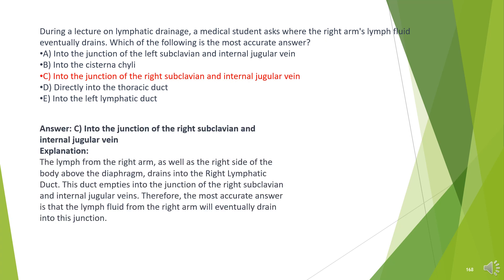The answer is C. Into the junction of the right subclavian and internal jugular vein. The lymph from the right arm, as well as the right side of the body above the diaphragm, drains into the right lymphatic duct. This duct empties into the junction of the right subclavian and internal jugular veins.